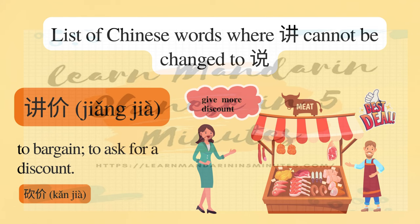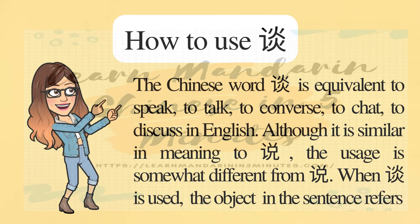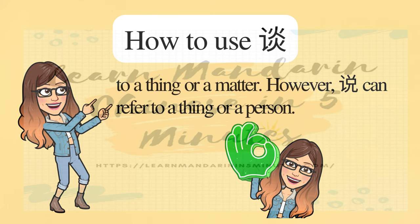The Chinese word 谈 is equivalent to 'speak,' 'talk,' 'converse,' 'chat,' or 'discuss' in English. Although it is similar in meaning to 说, the usage is somewhat different. When 谈 is used, the object in the conversation refers to a thing or matter. However, 说 can refer to a thing or a person.